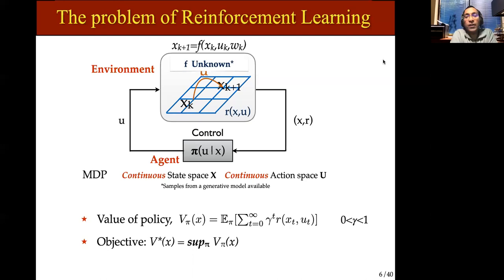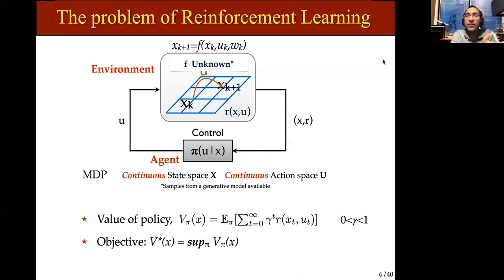The variation on the standard reinforcement learning setting we're going to consider is that, even though we don't need to know the transition model per se, we are going to assume we have access to a generative model — meaning a simulation model. The justification is that when people want to train robots to do certain maneuvers, nobody does the learning directly on the robot. This happens in a simulator first, and once it seems to work in the simulator, then you put it on the real robot. So the running assumption throughout is that we have access to a black box simulator and can get samples from it. We'll consider the discounted criteria, maximizing the expectation of the discounted sum of rewards.